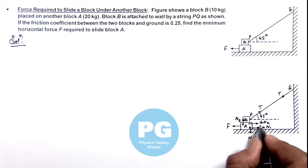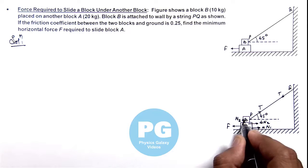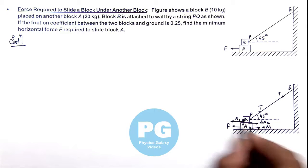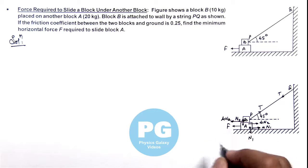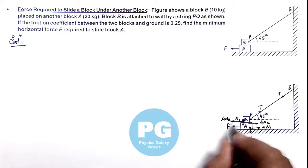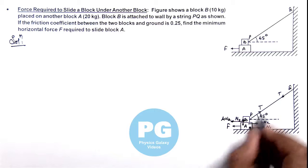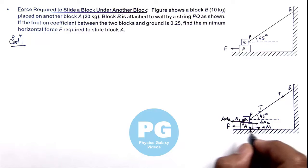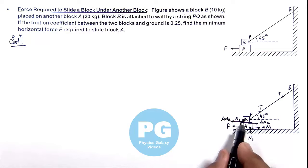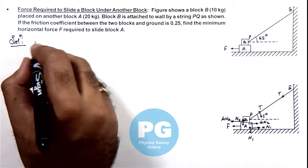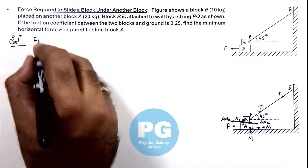According to Newton's third law, block B will experience a reaction to this friction, which is mu*N2 toward the left. This is the cause of tension in the string. If we draw the free body diagrams of these two blocks and analyze the situation, we can understand the forces on each block.